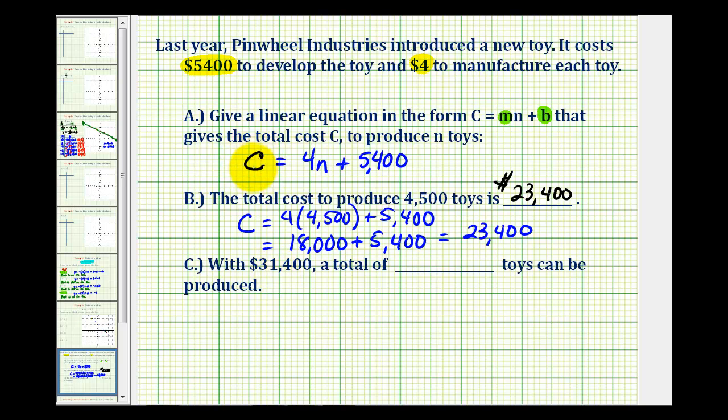So we're given C, we want to solve for N. So we'd have 31,400 equals 4 times N plus 5,400.